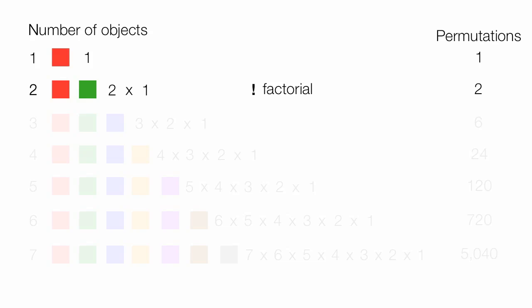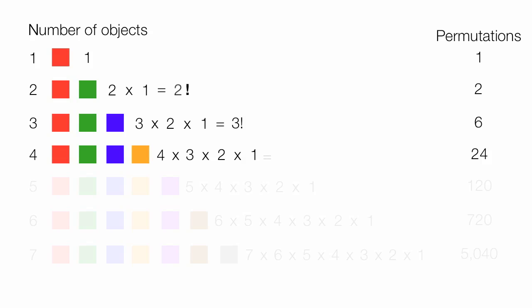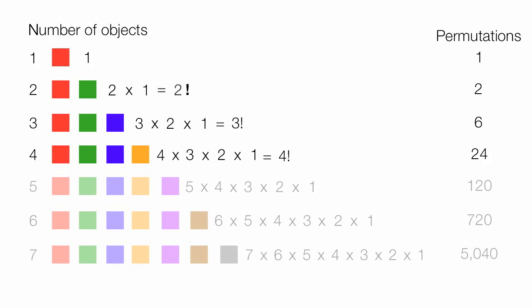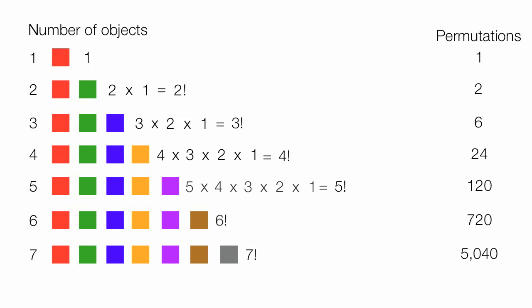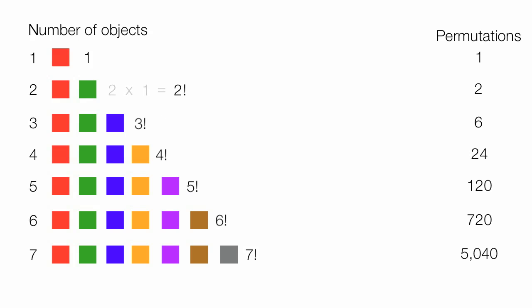The shorthand notation for two times one is two factorial. Three times two times one is three factorial. You're probably guessing this one's four factorial. Five times four times three times two times one is five factorial. This shorthand notation means you don't have to write it all out. The last one, of course, is seven factorial. Also, one factorial equals one. If I want to know the number of permutations, I just take the number of objects factorial.